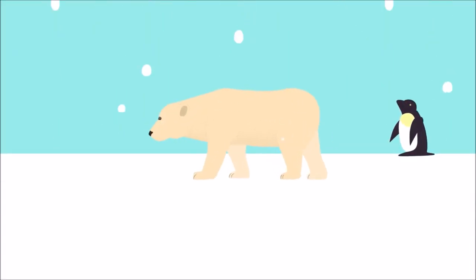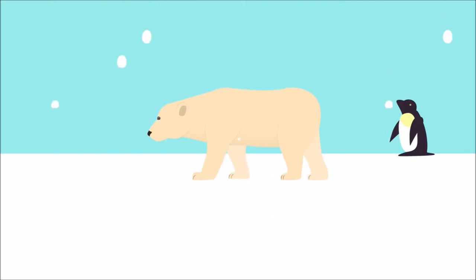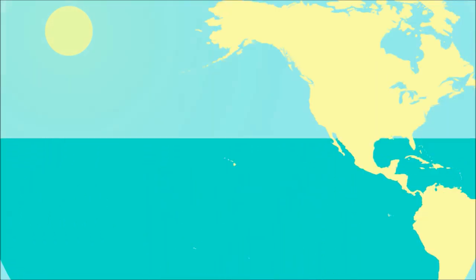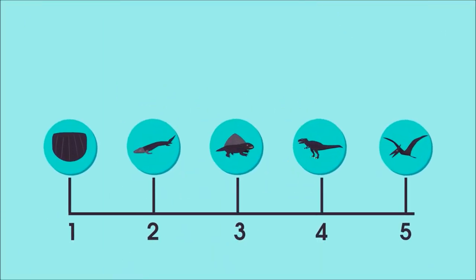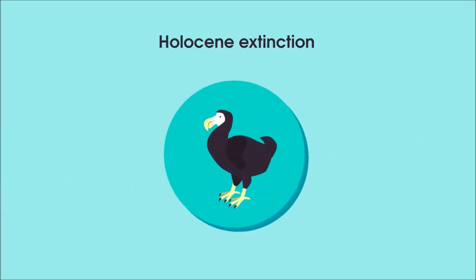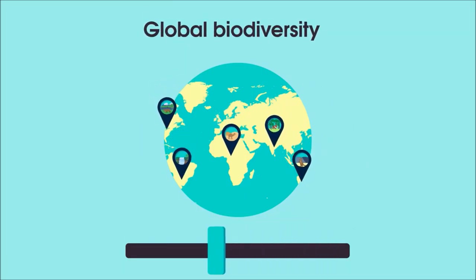It's important to know that biodiversity is not a static measure, but is responsive to numerous factors, including climate change. In fact, global biodiversity is generally thought to be declining right now. Biodiversity has declined in the past and a total of five major extinction events have occurred. Currently, we are in the planet's sixth major extinction event, known as the Holocene extinction.